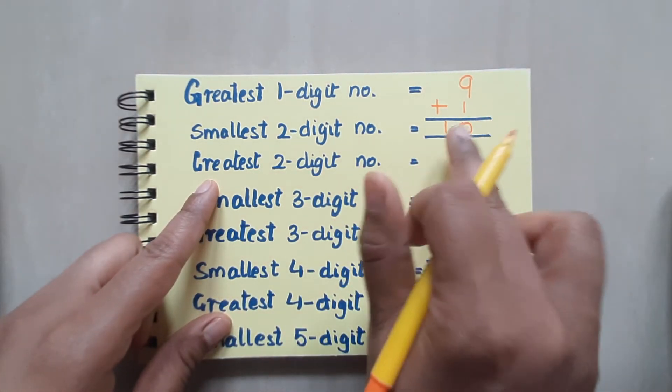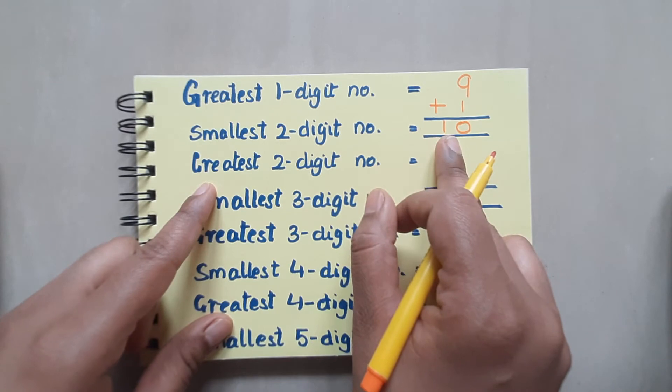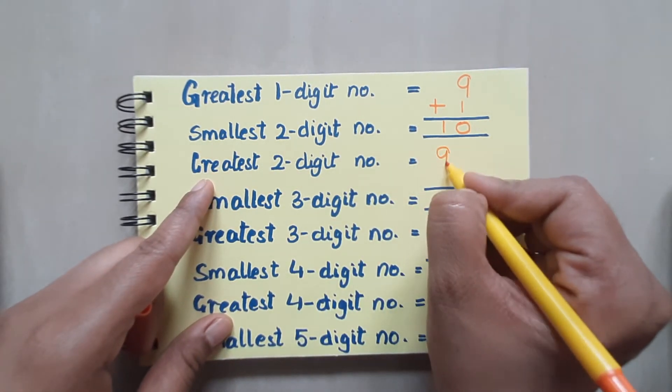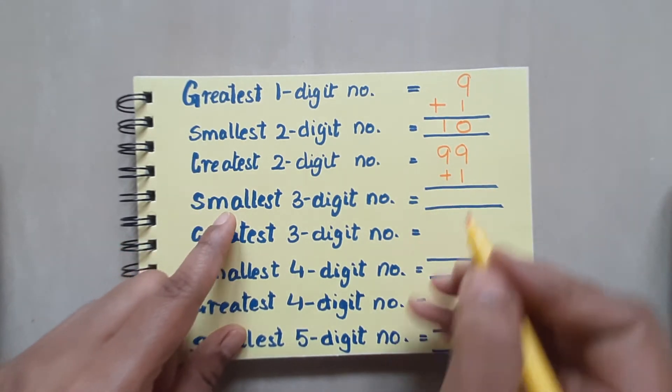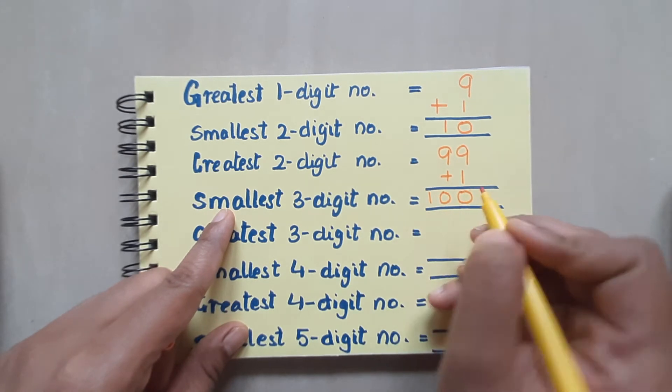And 10 being the first 2 digit number in the number series, so it is the smallest 2 digit number. So here our new place has been introduced that is 10s. So talking about greatest 2 digit number, you have 99. And if I add 1 to it, you get smallest 3 digit number. These things you already know.